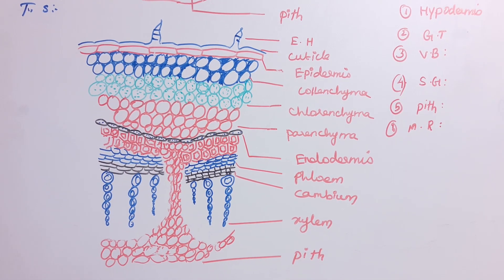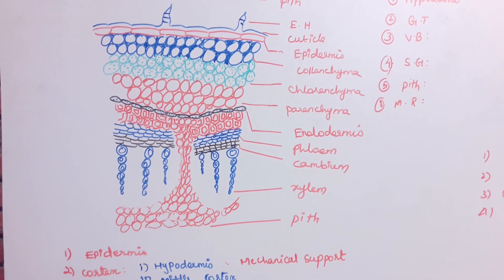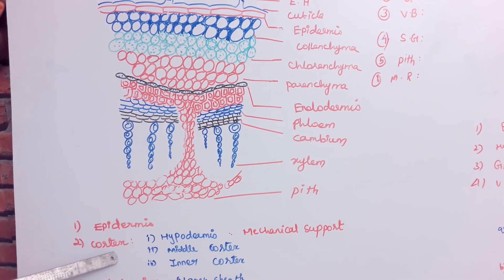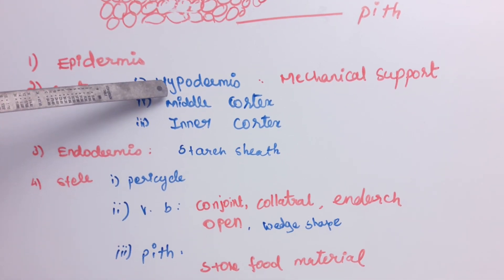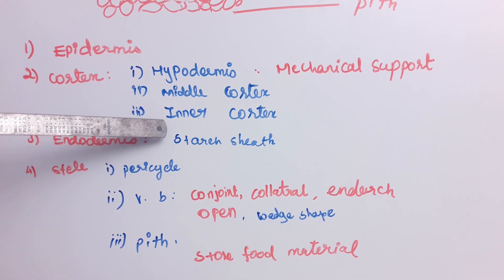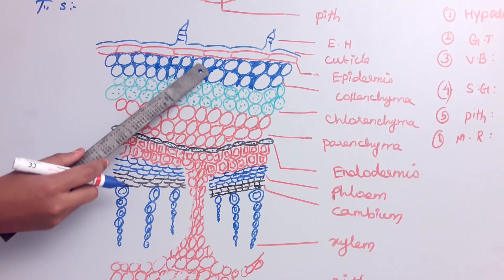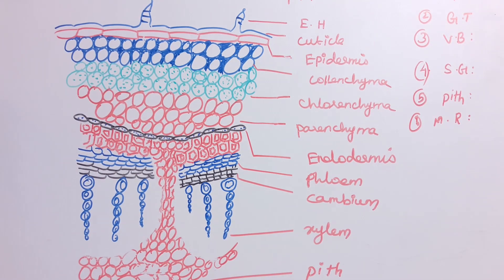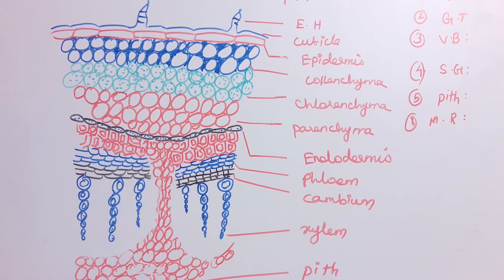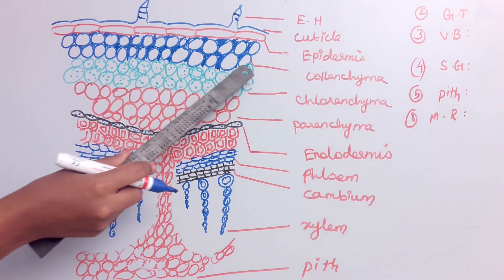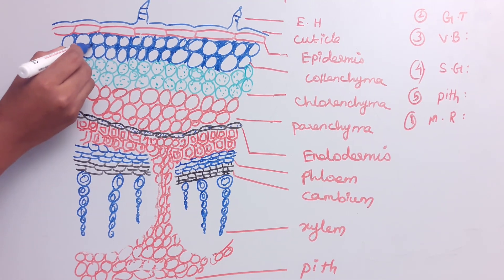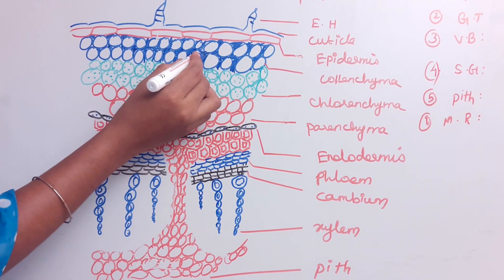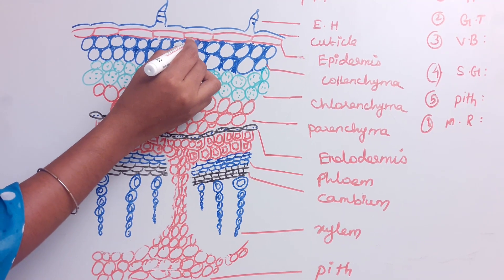Below the epidermis is the cortex region. The cortex has three layers: hypodermis, middle cortex, and inner cortex. The hypodermis is the first layer below the epidermis. The hypodermis is made up of collenchyma cells, which have no intercellular spaces.